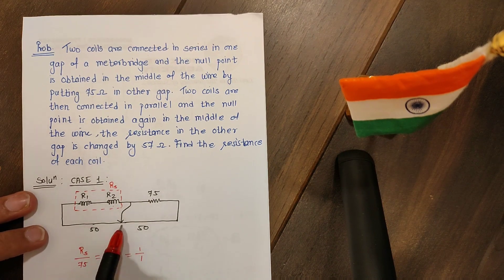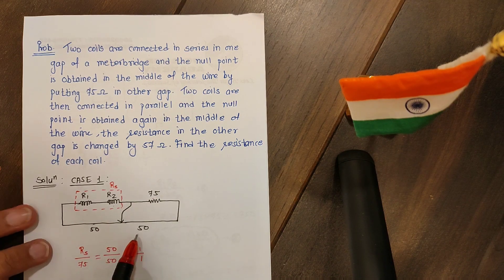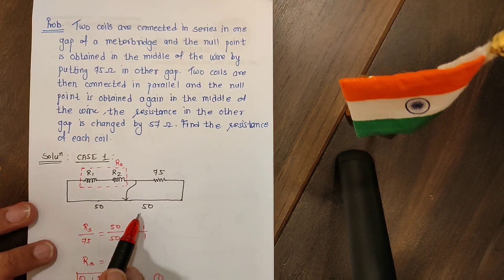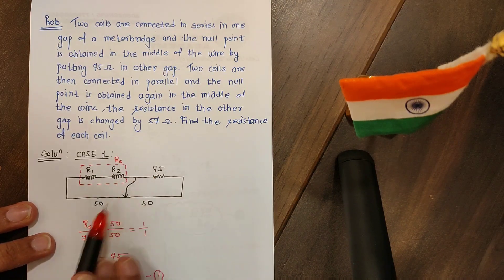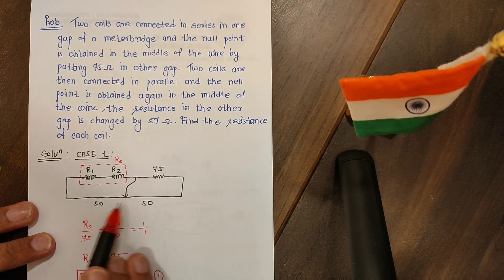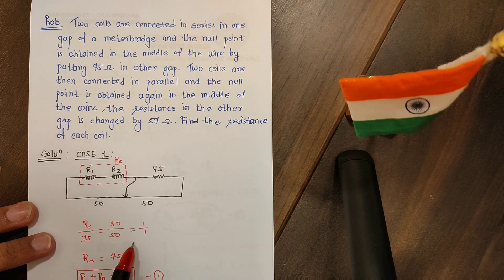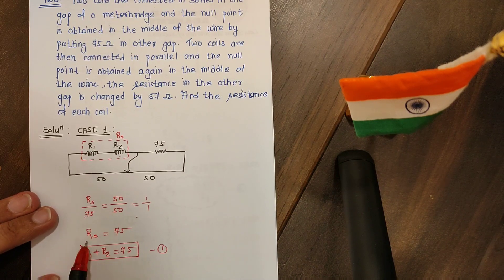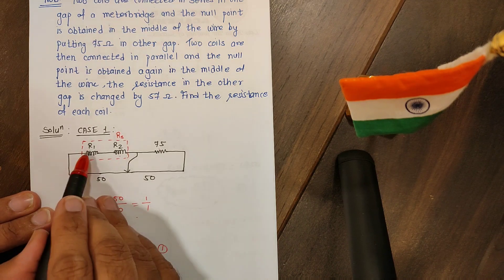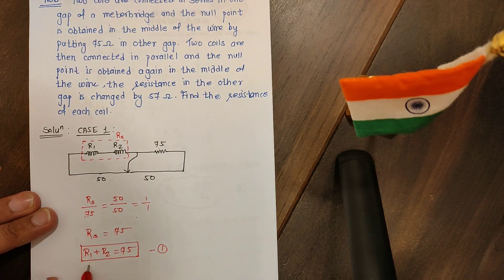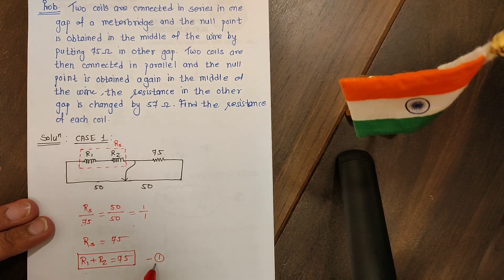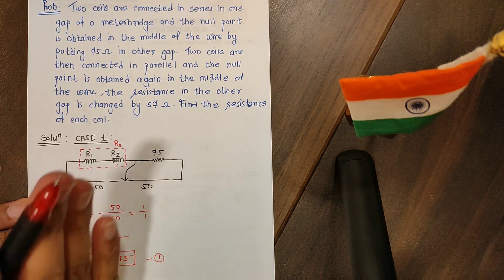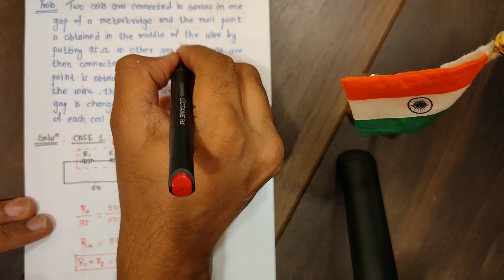The null point is exactly at the middle, so the dividing ratio is 50:50. Applying the balancing equation: Rs / 75 = 50 / 50 = 1, so Rs = 75 ohms. Since the coils are in series, Rs = R1 + R2 = 75 ohms. We mark this as equation number 1. Now the second part is more complicated.